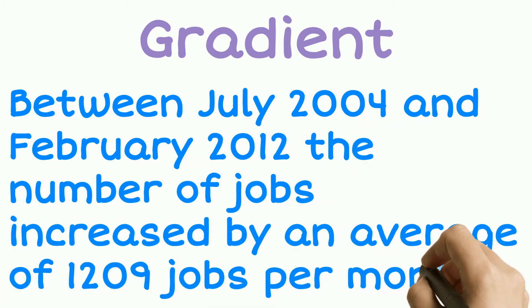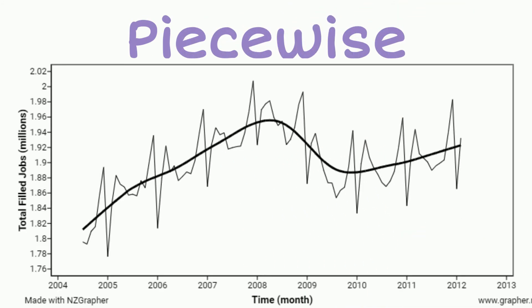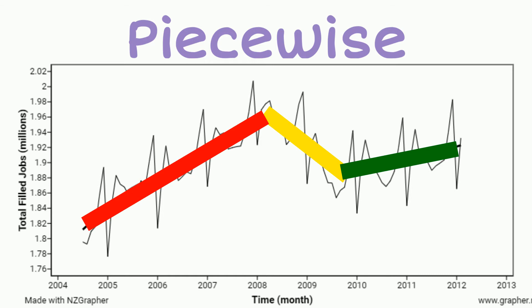We now want to have a look at what we call a piecewise function. So if we look closer at the trend line, we can see that the trend pattern makes some big changes during the entire period of time. So we're going to break these into sections, usually maximum of three or four. And this is called a piecewise graph.